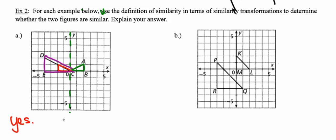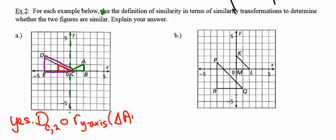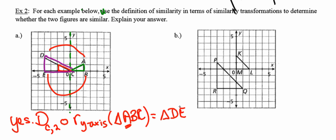Now I need to identify the transformations. I reflected across the y-axis first, so: following a reflection across the y-axis. The dilation had its center at the origin or point C — either is correct because they're the same point — with a scale factor of two. So: a dilation with center at point C with a scale factor of two, following a reflection in the y-axis of triangle ABC, will map to produce the second triangle. When naming the second triangle I have to be careful: point A mapped onto point D, point B mapped onto point E, and point C mapped onto itself. So the second triangle is triangle DEC.